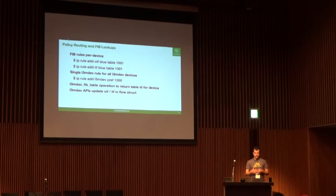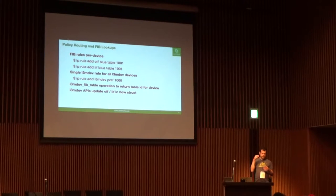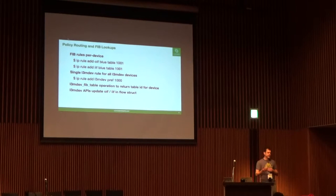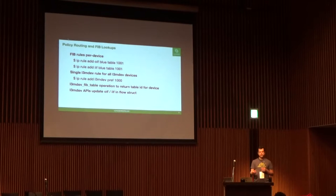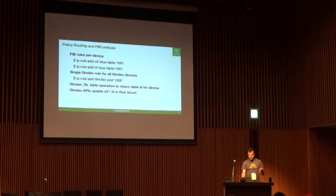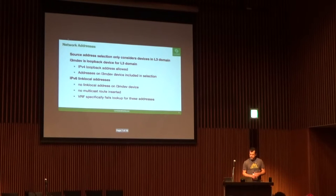As part of getting that match to work, the flow struct gets set up through different parts of the networking stack. We have to flip the OIF or the IIF from either the ingress device or the socket that's been bound to a device. We flip that over to the L3 MDEV right before the lookup so that it can hit the FIB rule and go to the table associated with that device. Those are some of the L3 MDEV APIs put in for a FIB lookup perspective.